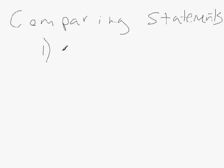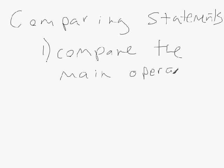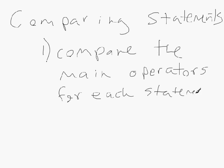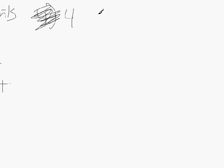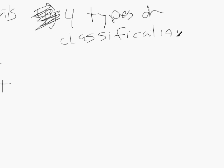When you compare statements, you'll be comparing the column that falls under each statement's main operator. You compare the truth values that fall under the main operators. Just keep that in mind, because especially after you build the truth table it can be sort of confusing to look at. There are four types of classification when you compare statements.